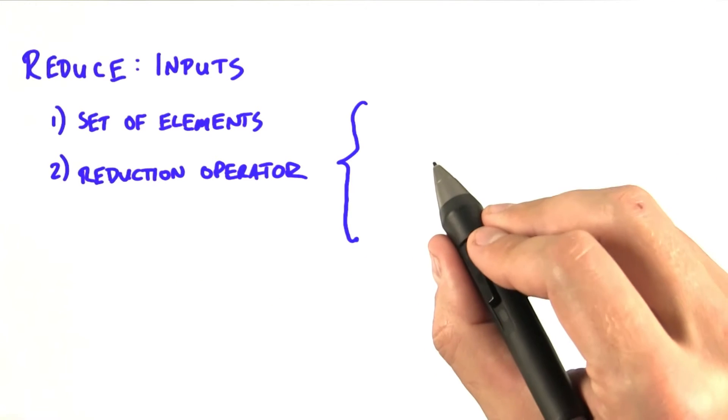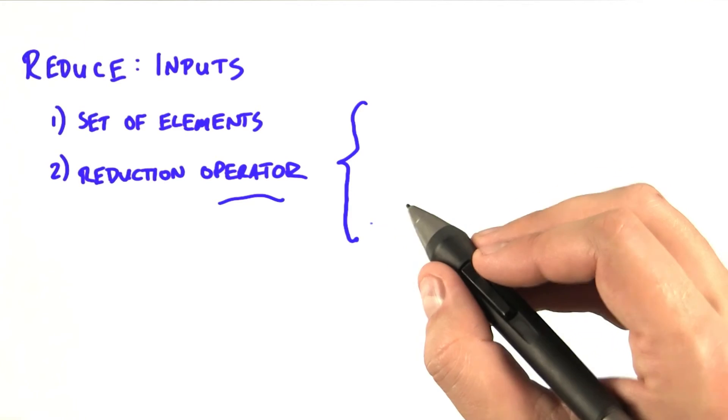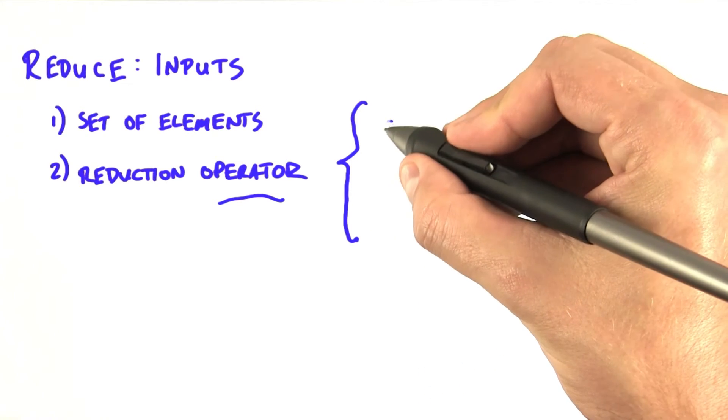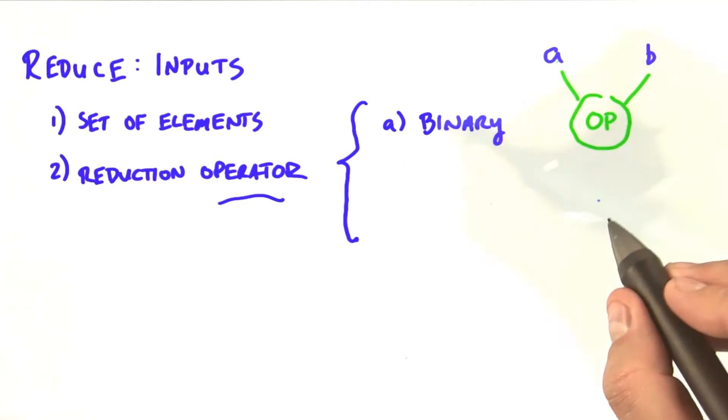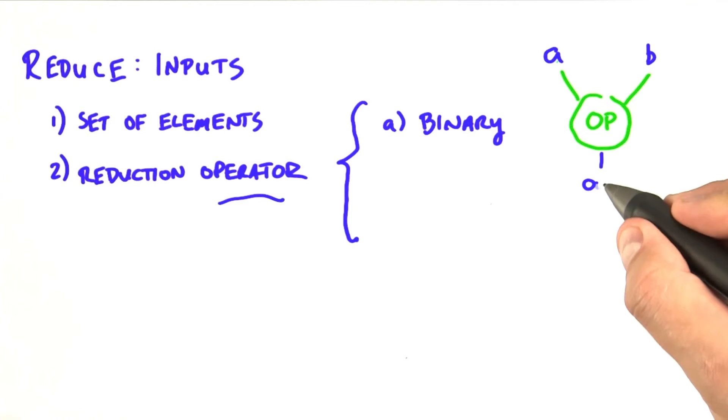Let's be a little more precise in terms of what operators we're going to support with our parallel implementation. Our operators need to have the following two characteristics. The first is that the operators are binary. The operator must operate on two inputs and create one output. Plus is a binary operator, for instance.